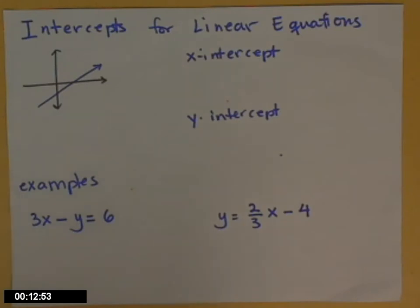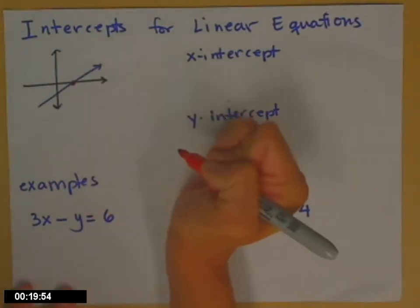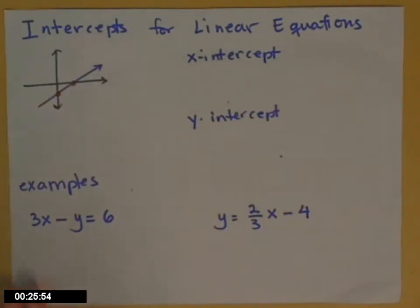So I have a picture drawn here. I have my axes. I have a line drawn on it. This point right there, where my line crosses the x-axis, is the x-intercept. And over here, where my line crosses the y-axis, is the y-intercept.